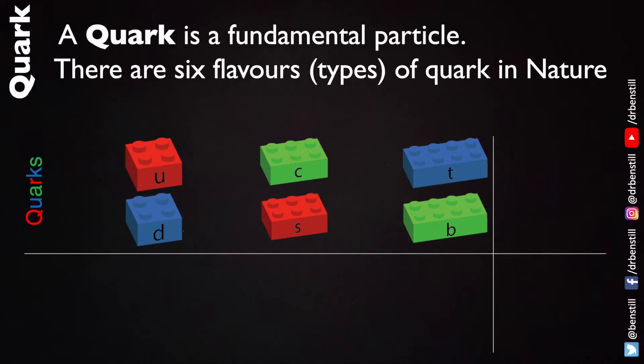There are six flavours which is the particle physics term for types of quark that are found in nature. There is the up quark and the down quark. The up quark and down quark are found in protons and neutrons and they are therefore the most common types of quark in our universe.